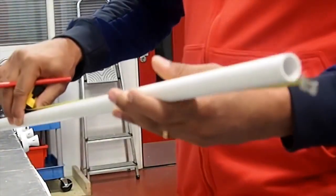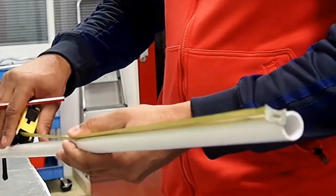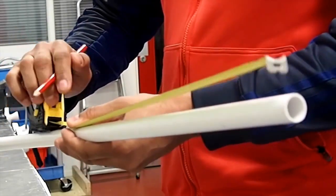To begin with, we need our PVC conduit, a tape measure, and a pencil to measure off about 400 millimetres. So I'm going to do that now.